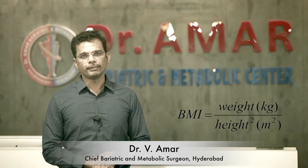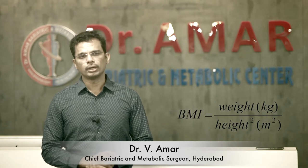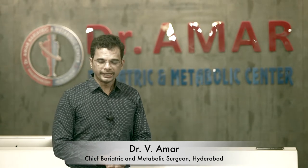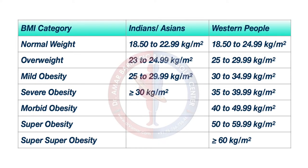Based on BMI, obesity has been divided into different categories. In Indians, body mass index should be less than 23 kg per meter square. If it is between 23 to 24.99, it is considered as overweight. 25 and above is mild obesity, and 30 and above is severe obesity.